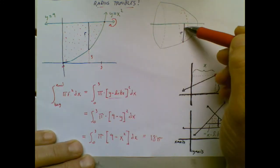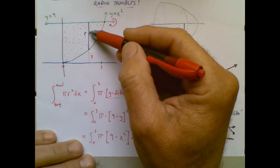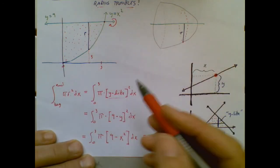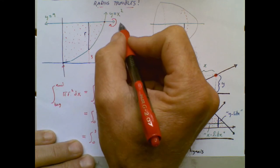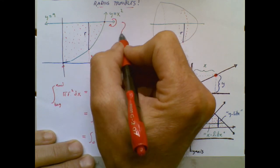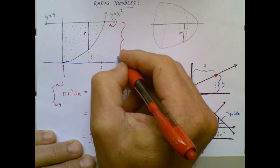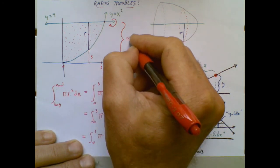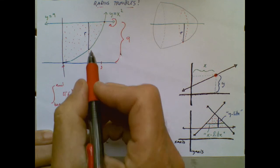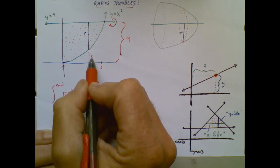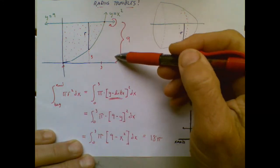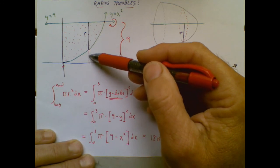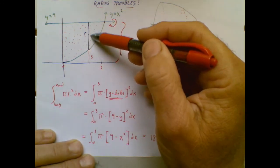So now to figure out what to write there, I do this little bit of segment subtraction. I know that entire distance is 9, and I know this distance that I don't want is y. So the whole distance 9 minus this part y that I don't want leaves me with the part I do want. 9 take away y, is really that r. It's a big deal right there.